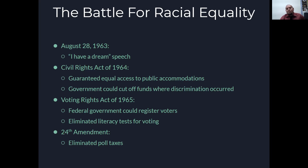From LBJ, he passes the Civil Rights Act of 1964, which guaranteed equal access to public accommodations, and the government could cut off funds where discrimination occurred — so if you're a federally funded institution, they could cut your funding if you had segregation policies. You also have the Voting Rights Act of 1965, which allowed the federal government to register voters and eliminated literacy tests for voting. And then you have the 24th Amendment, which eliminated poll taxes.